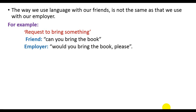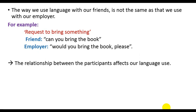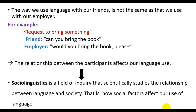This example shows that the relationship between the participants affects their language use. Therefore, sociolinguistics is a field of inquiry that scientifically studies the relationship between language and society — that is, how social factors affect our language use. Now we turn to the scope of sociolinguistics.